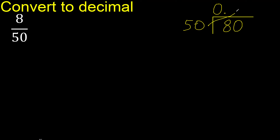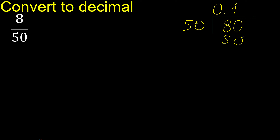50 multiplied by which number is nearest to 80 but not greater? 50 multiplied by 2 is 100 — excessive. 50 multiplied by 1 is 50, which is not greater, so that is the nearest number. Subtract: 80 minus 50 is 30. There is no number that goes down, therefore complete with 0.